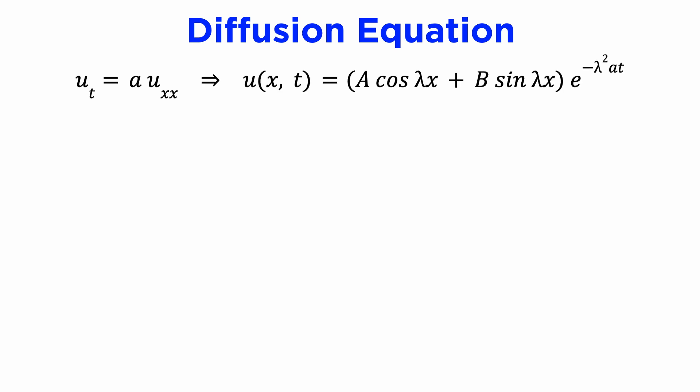We found that the general solution was given by u(x,t) equals e to the negative lambda squared at times a cosine lambda x plus b sine lambda x, where capital A and b and lambda are constants.